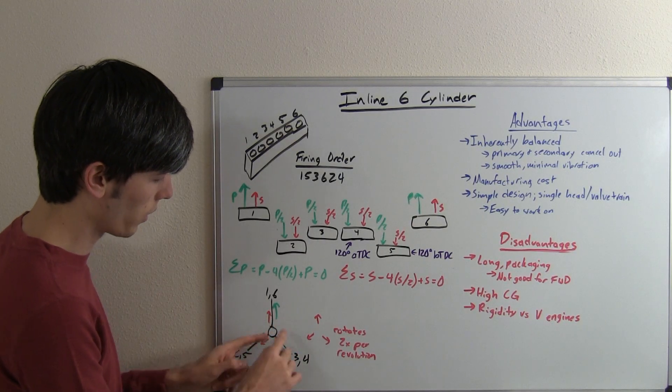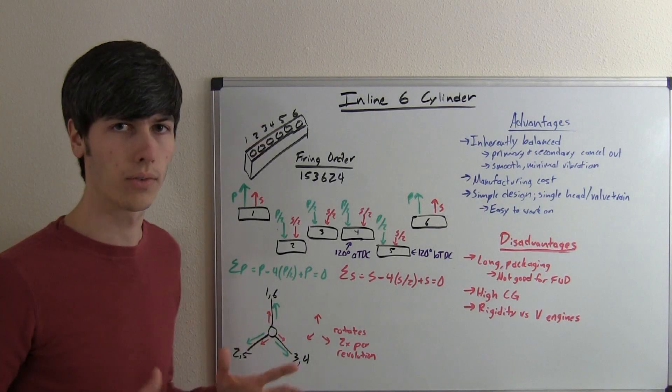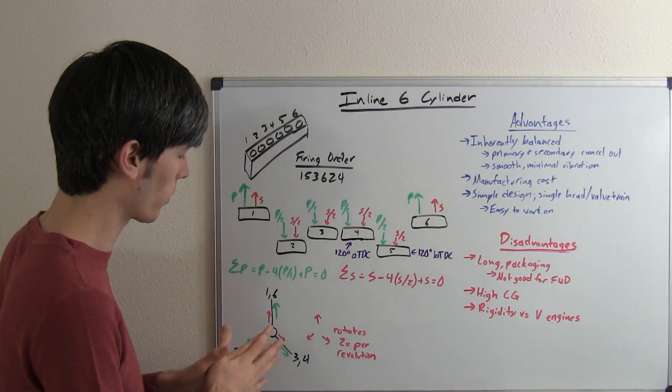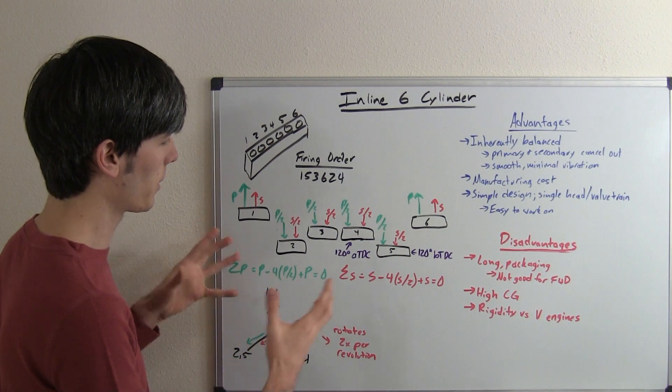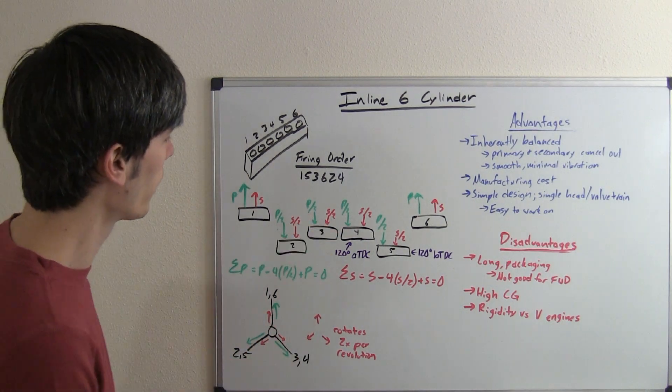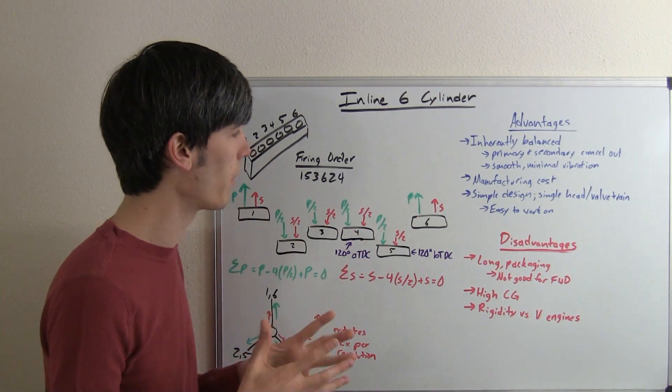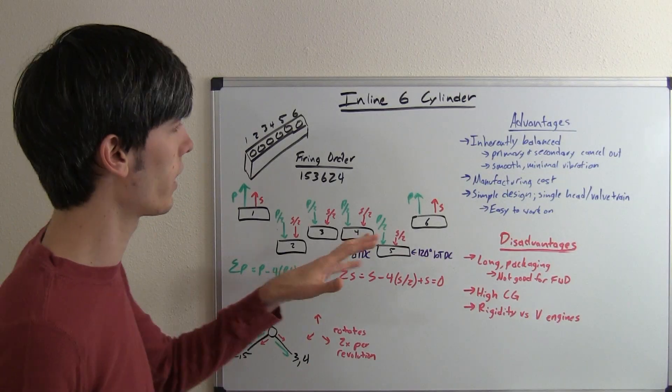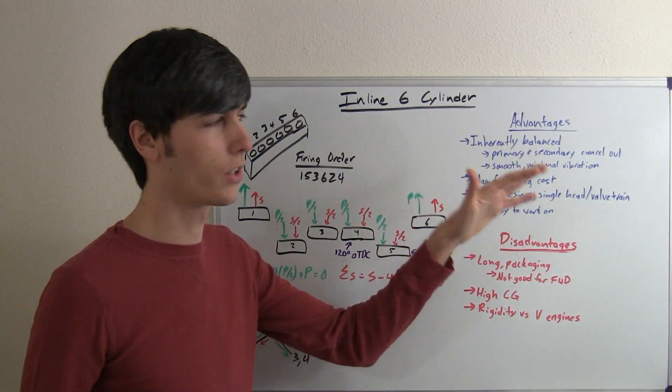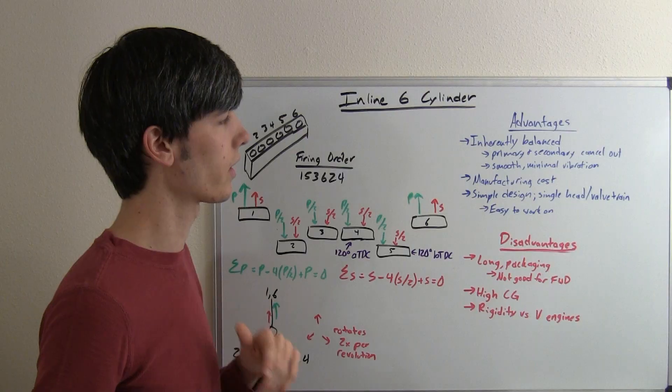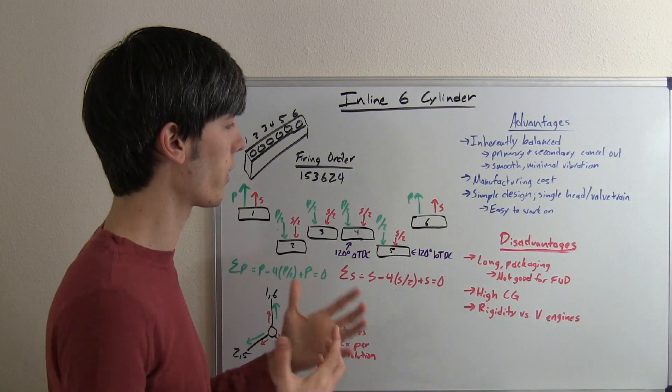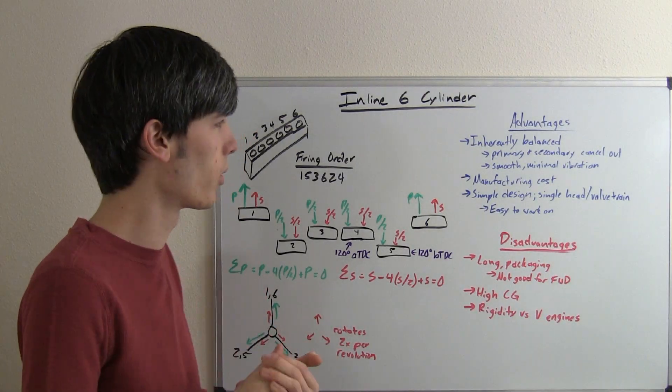And so these in red, secondary forces of course happen twice per crank revolution, so this is going to be rotating twice as fast. But the big thing you want to understand here is that all of the forces are going to balance out. And that's the huge advantage of an inline six. Advantages: inherently balanced, the primary and secondary cancel out, so this gives you a very smooth engine with very minimal vibration.